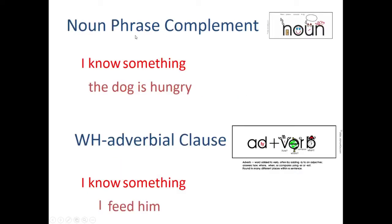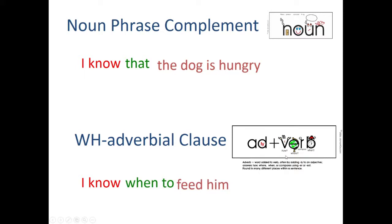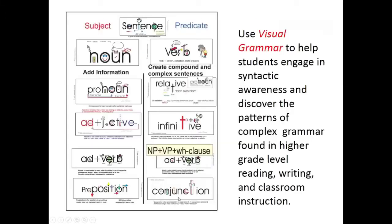We also have noun phrase complements. 'I know something; the dog is hungry' — we get rid of the pronoun 'something' and put in the relative pronoun 'that': 'I know that the dog is hungry.' Or a WH adverbial: 'I know when to feed him,' 'I know how to feed him,' 'I know why to feed him' — using how, when, where, why, or some comparative.